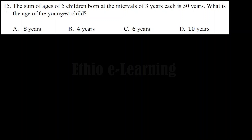The sum of the ages of five children born at intervals of three years each is 50 years. What is the age of the youngest child?